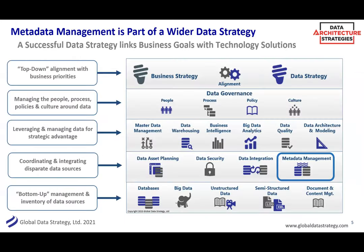Many of you are familiar with our framework at Global Data Strategy, which provides a kind of menu of items you really need to make data successful in your organization. Everything should align with the business strategy and data strategy. Metadata, as you can see in the lower right, is key to all of that. No matter what lens you look at the data landscape, you can start at metadata and broaden out — metadata is part of data architecture, supports quality, supports analytics and BI, is a key part of governance. They are all joined together, and today's topic is metadata in the context of how it supports these other areas.